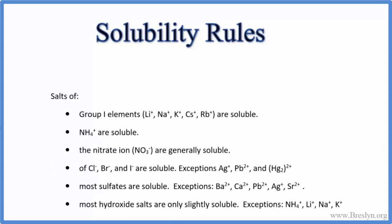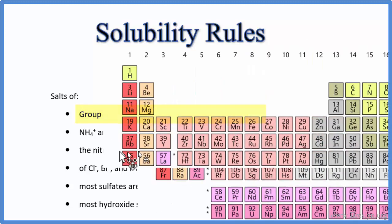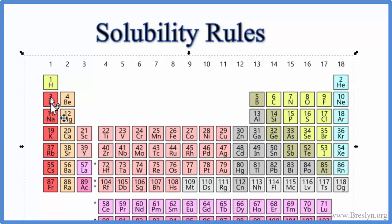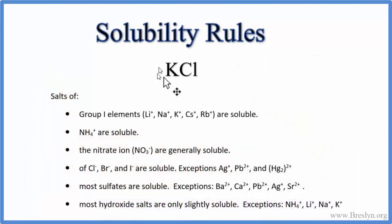If you're given a compound like KCl, potassium chloride, you want to know if it'll dissolve in water — if it'll dissociate or break apart into its ions. The first rule says that group 1 elements are soluble. On the periodic table, group 1 are the alkali metals — they're always going to be soluble. We have our K, our potassium ion, attached to the chloride ion, so KCl is soluble.